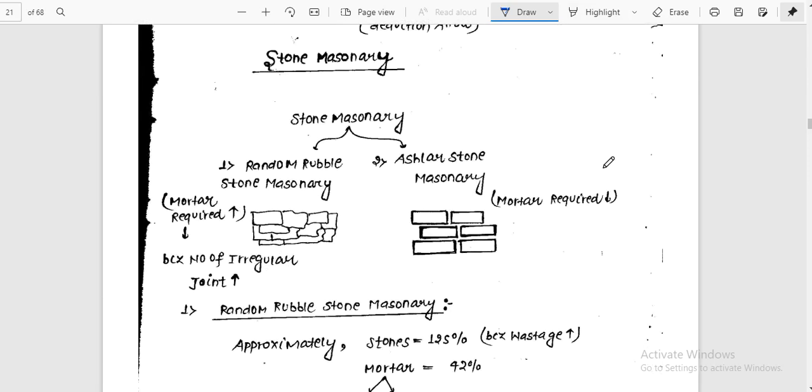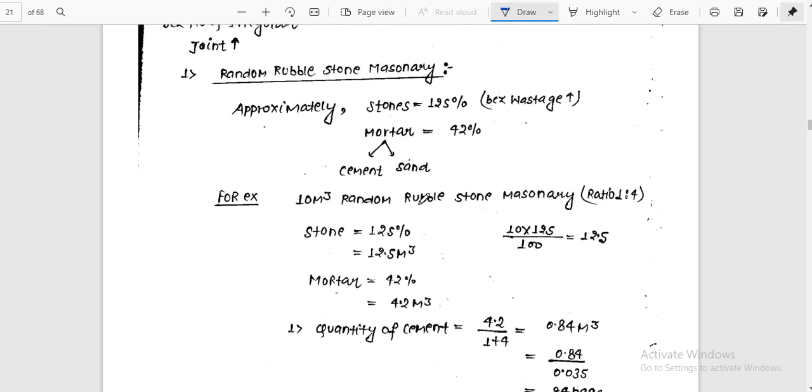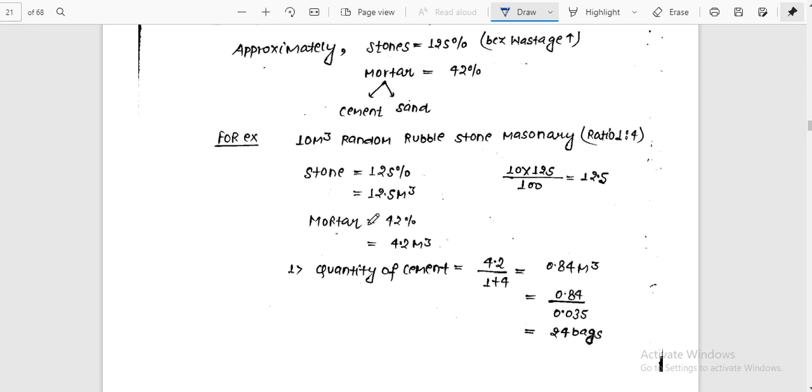After completing this rate analysis, we will move to stone masonry. We have two types of masonry, very important. One is random rubble stone masonry, which uses mortar. Random rubble is irregular. For random rubble stone masonry, approximately stone is 125% and mortar is 42%. For example, if you have 10 meter cube rubble stone masonry, then we will get stone as 12.5 meter cube, mortar is 4.2 meter cube. So 125% for stone and 42% for mortar.